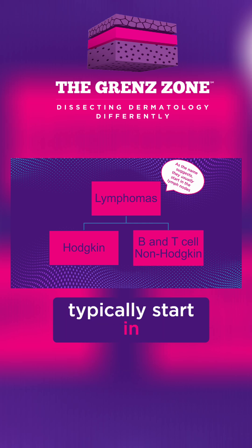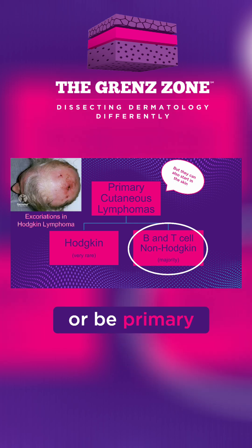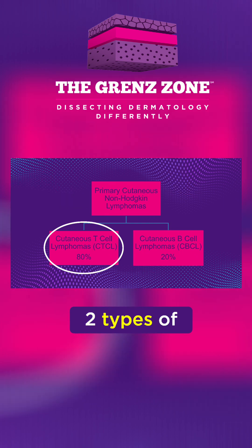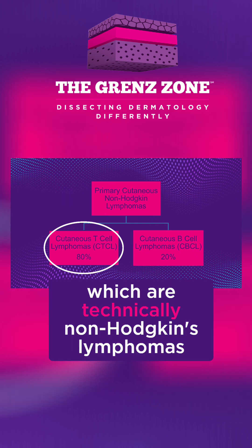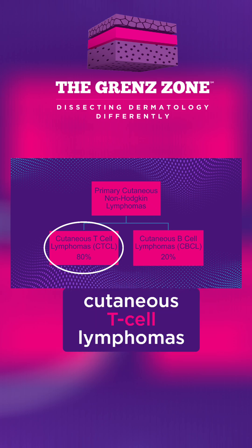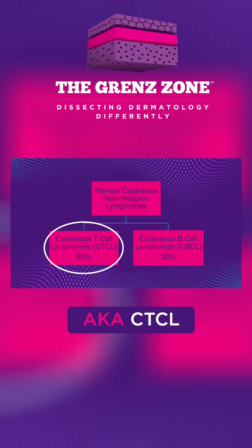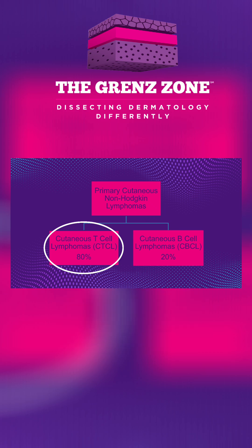While lymphomas typically start in the lymph nodes, they can also start or be primary in the skin. There are two types of primary cutaneous lymphomas, which are technically non-Hodgkin's lymphomas. 80% are cutaneous T-cell lymphomas, aka CTCL, and 20% are cutaneous B-cell lymphomas, aka CBCL.